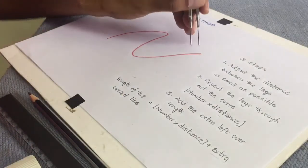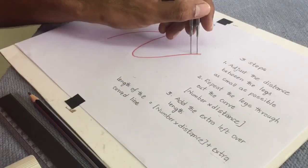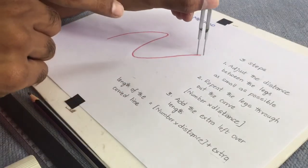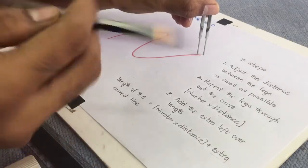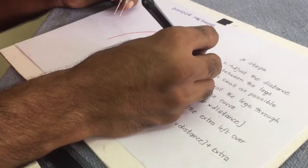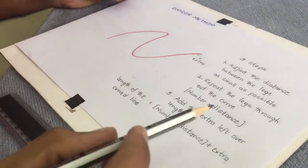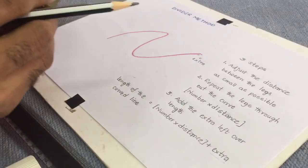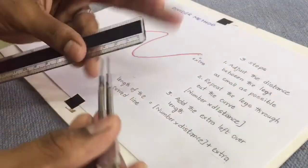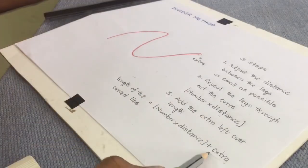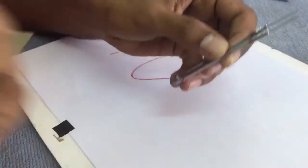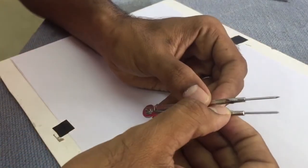Sometimes when you are repeating, the situation comes where you reach a point and the length of the last part is less than the distance between the legs of the divider. Then you have to consider this as an extra part and measure this extra part separately with the help of a scale. Add the extra part's length to get the total length of the curved line.